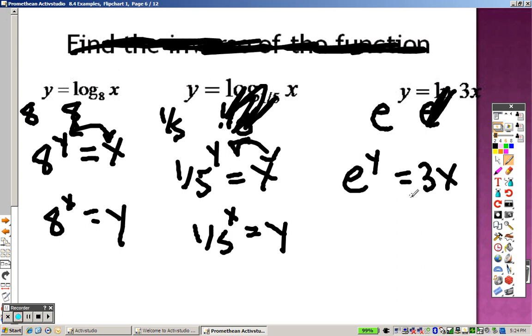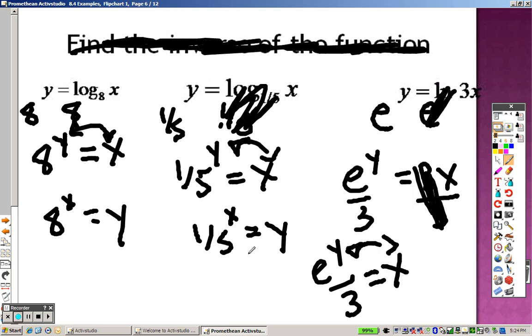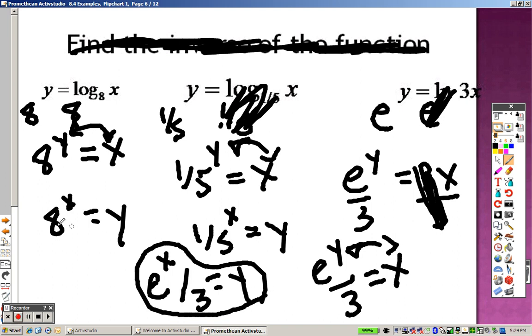Equals 3x. It's got x by itself. I divide by 3 on both sides. So by doing that, I get e to the y over 3 equals x. But once again, if you want to graph, you have to swap those around. So really, it's e to the x over 3 equals y. And then you can graph that.